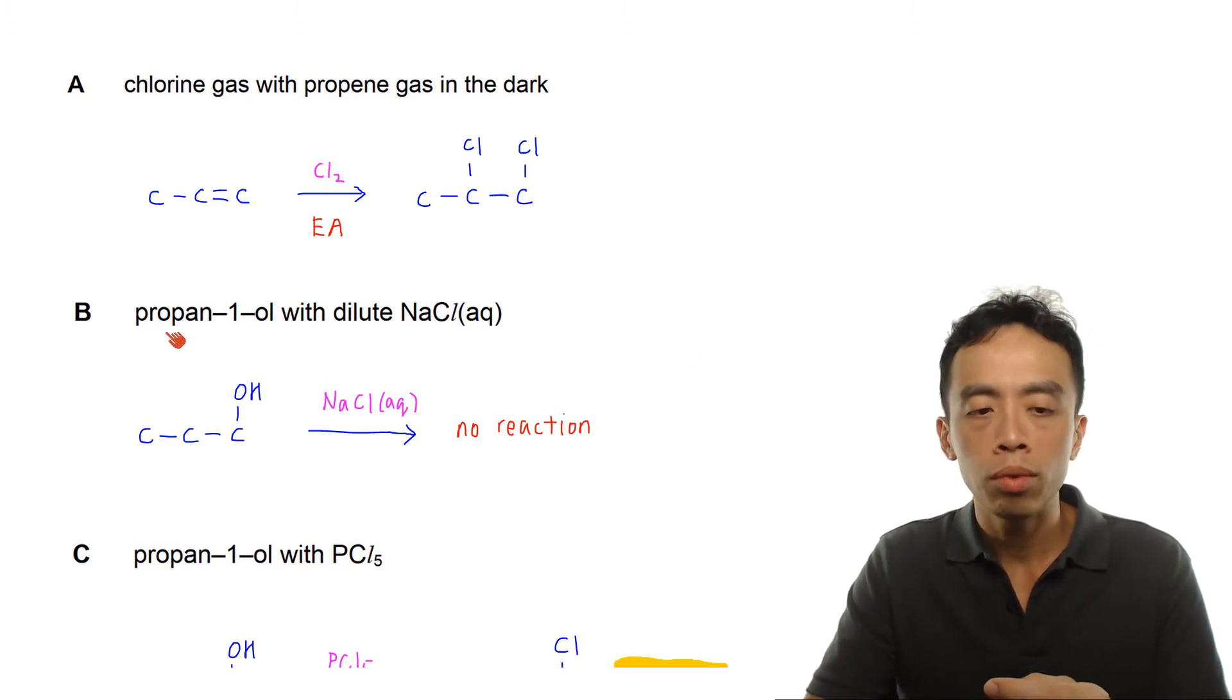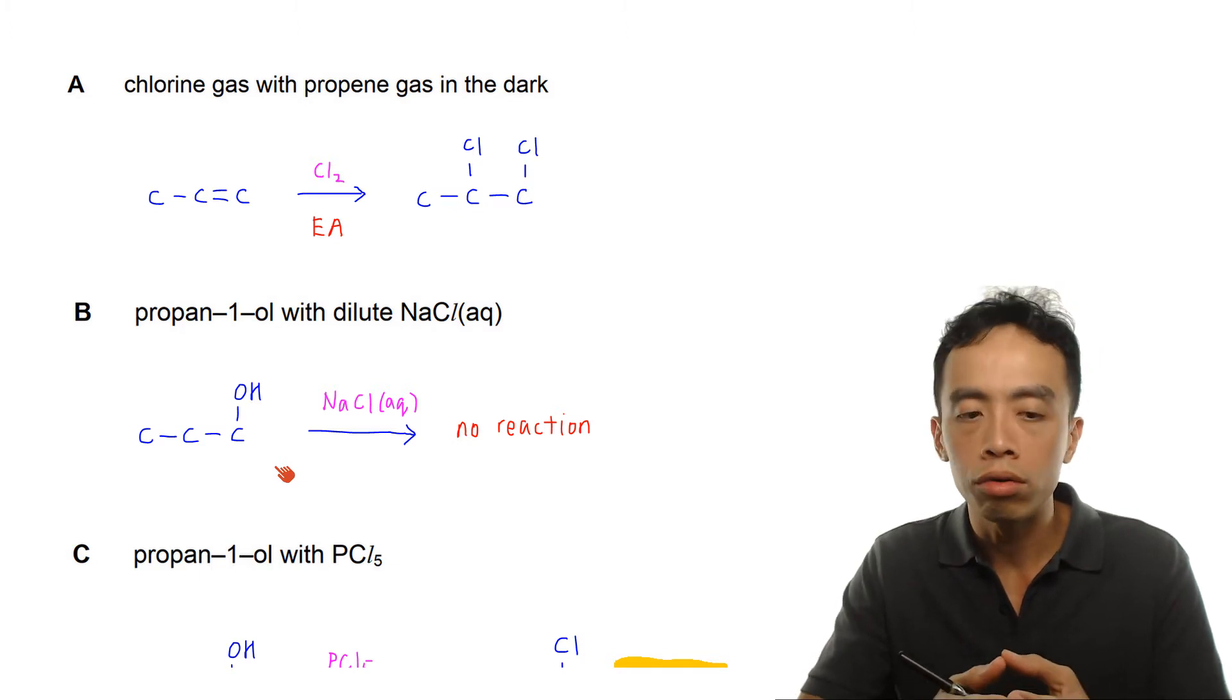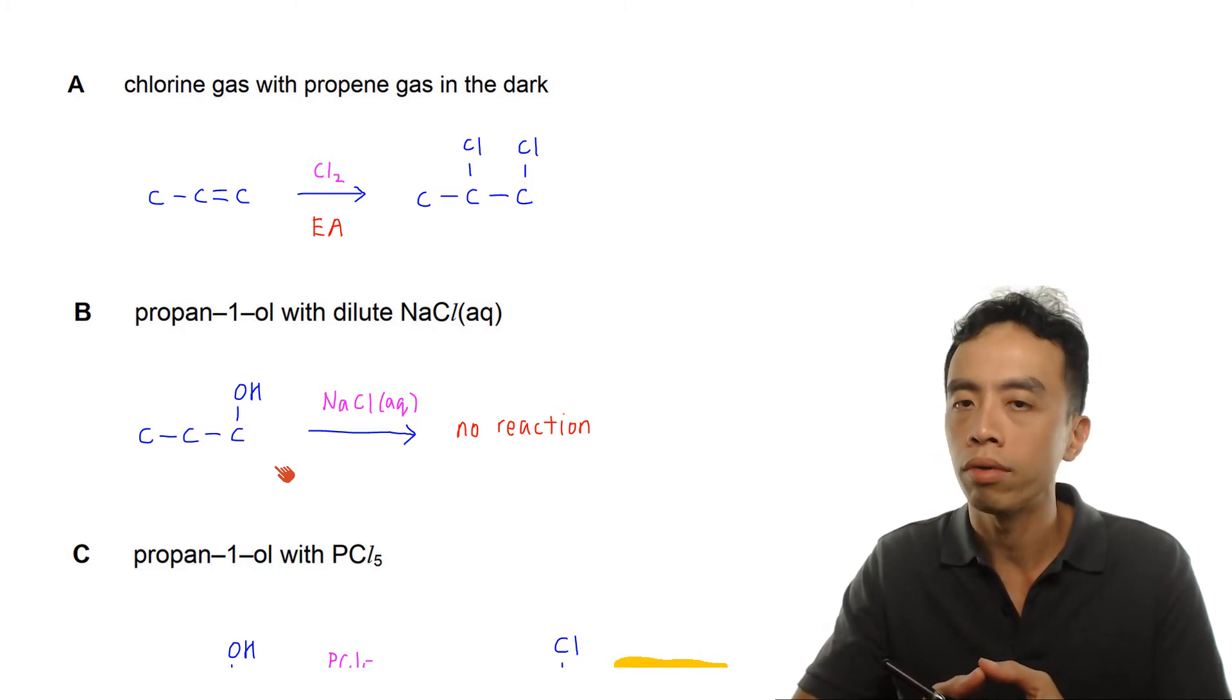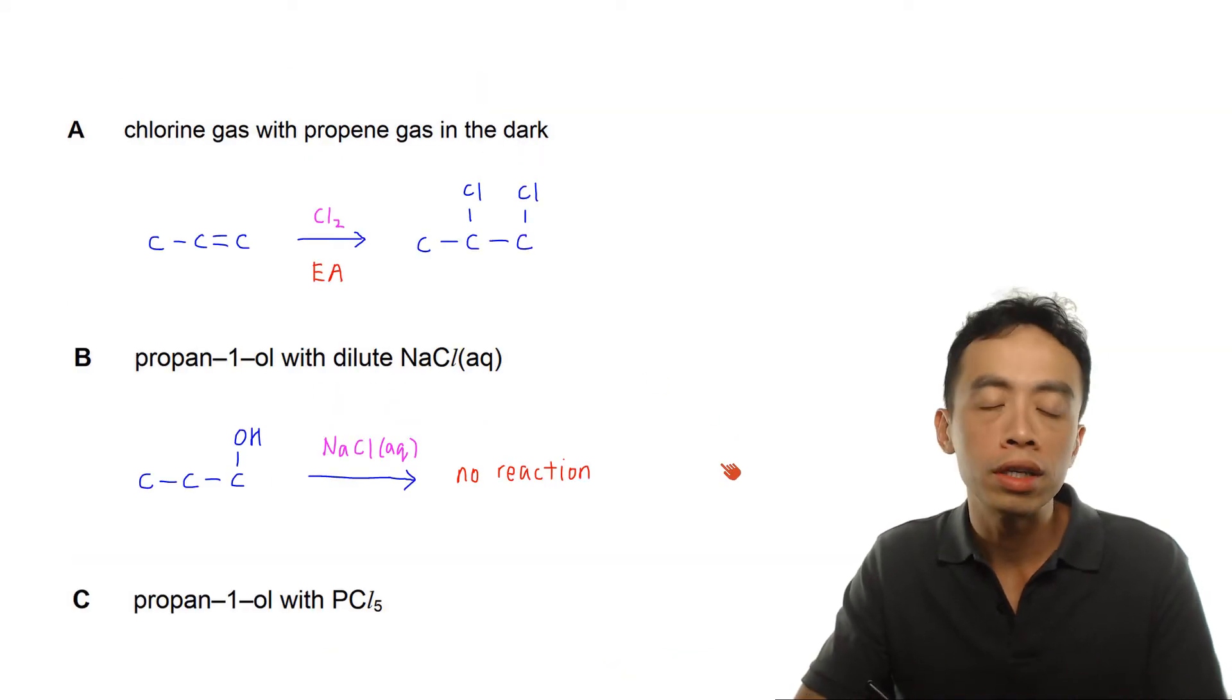Now for B, propan-1-ol with dilute sodium chloride aqueous. Now propan-1-ol has an OH group on the first carbon. If we run through the reaction of alcohols, we don't really have a reaction involving sodium chloride aqueous. So option B, there's no reaction, so therefore there's no product being formed. So B definitely is out.